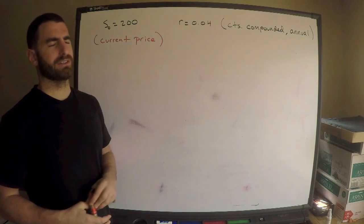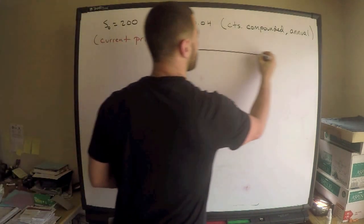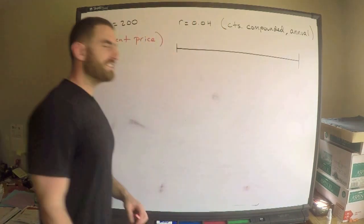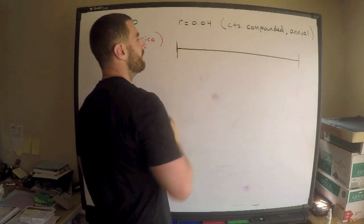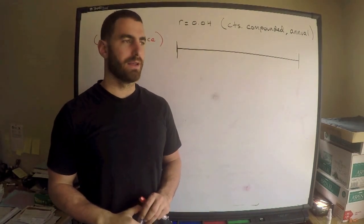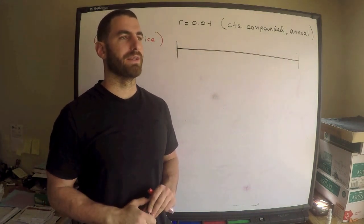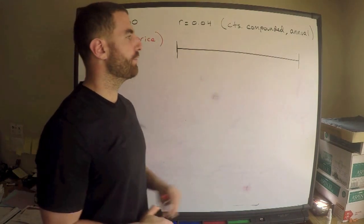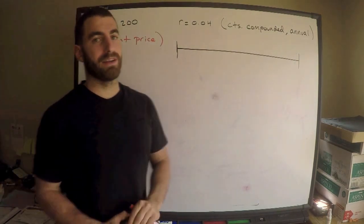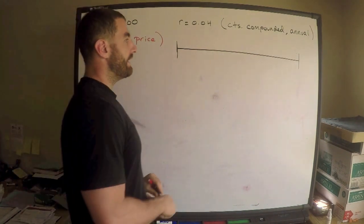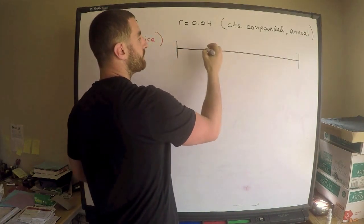We have some dividends paid, which is really what makes this question work. Let me draw a little time diagram regarding the dividends. The dividends are paid quarterly, and we're interested in obtaining this contract — being obligated to buy or sell at year one, after one year. This is a forward contract, so the person buying is obligated to buy and the person selling is obligated to sell.